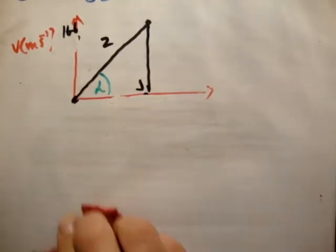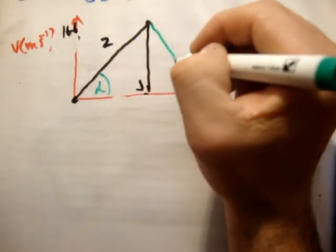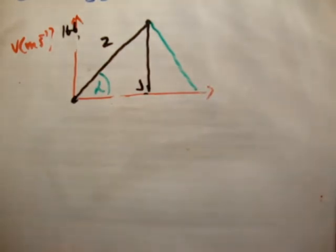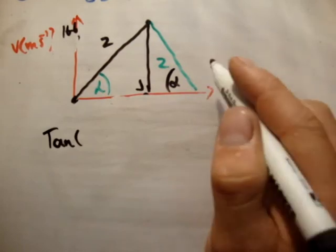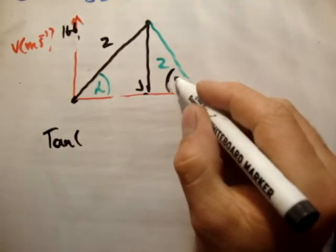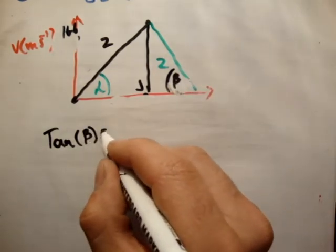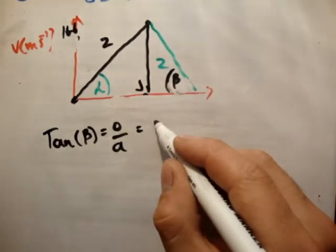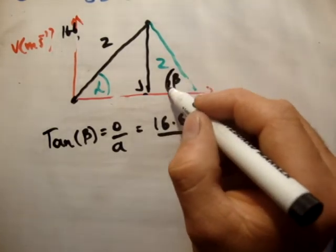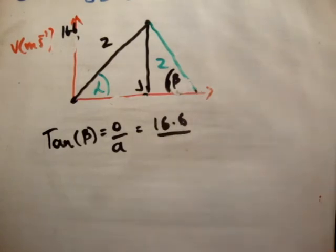Then we're told that the particle decelerates to rest immediately, and it does that in 2 meters. So the area underneath this curve is 2 meters. We're asked to calculate the deceleration. There are a couple of ways of doing this again. We could use tan. I'm going to call that beta. Tan(β) equals the opposite over the adjacent equals 16.6 over the adjacent, which we don't know. That's no good to us, not yet anyway.